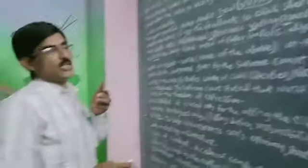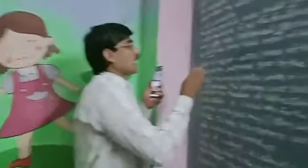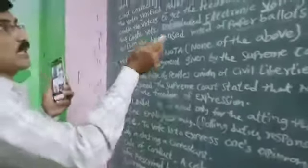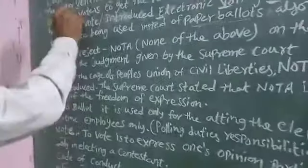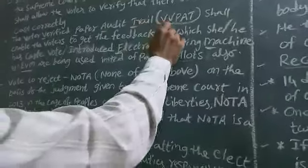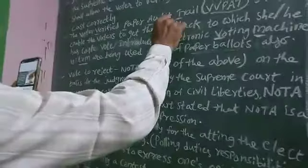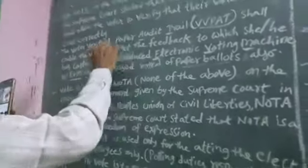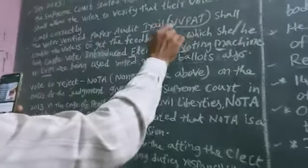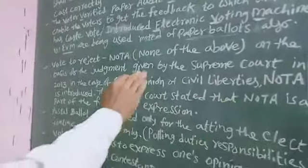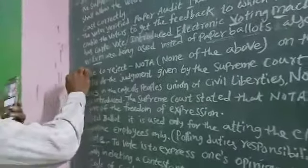Before the Subramaniam Swami case, only paper ballots were used in election contests. After the Electronic Voting Machine was introduced, there is also the VVPAT — Voter Verified Paper Audit Trail — which was also introduced.